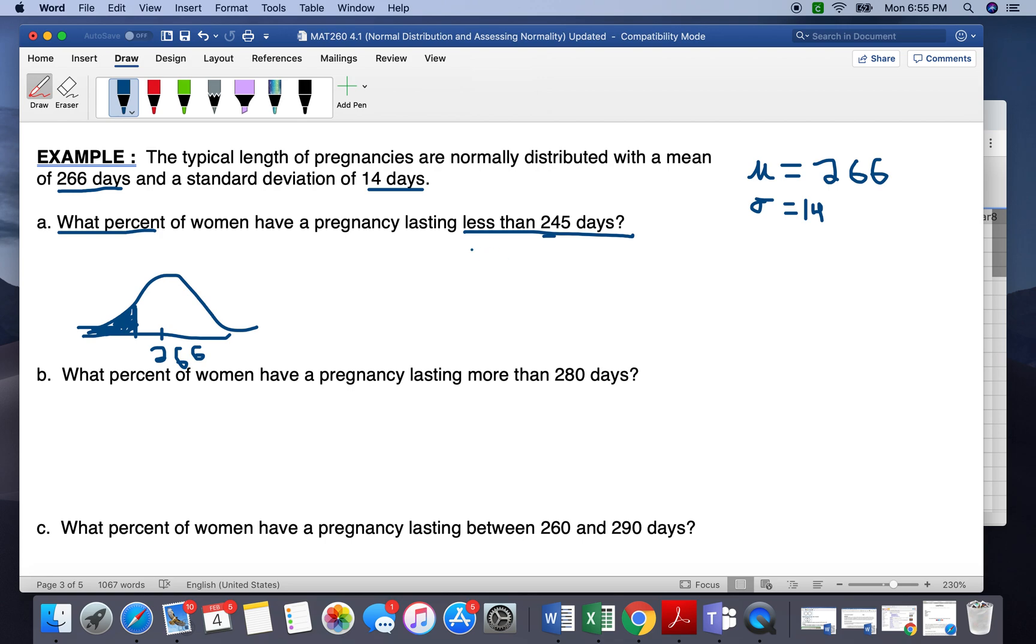So now that we have all of that written out, we can write this in statistical terms as probability that x is less than 245.